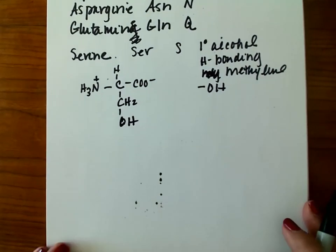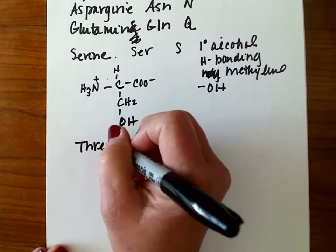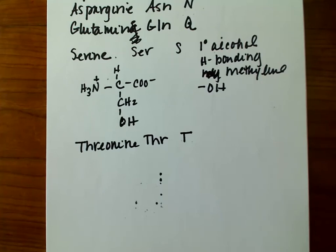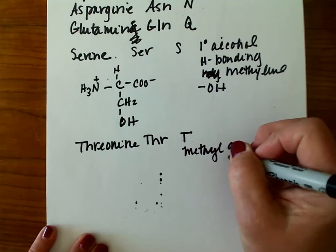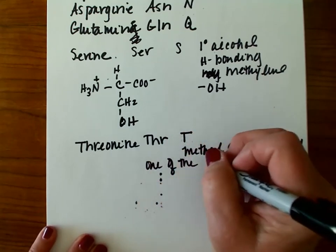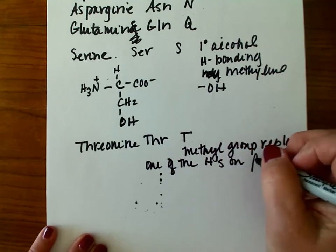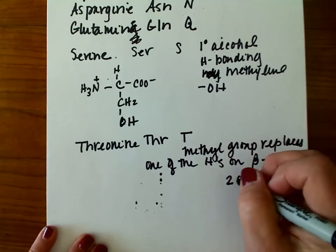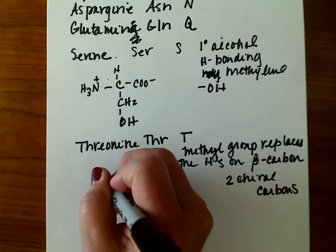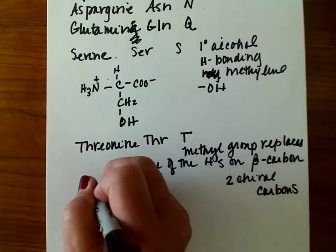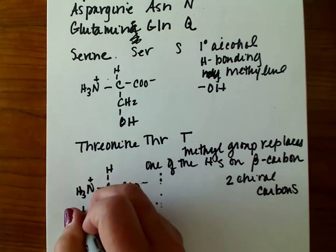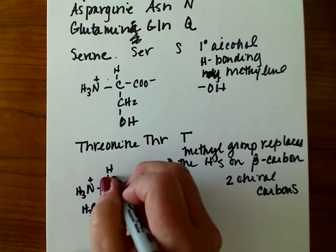Next up is threonine — THR, T. It is basically the same as serine except it has a methyl group that replaces one of the hydrogens on that beta carbon. This too will then have two chiral carbons. So we have our alpha carbon, alpha carboxyl group, alpha amino group, and a carbon attached to a hydrogen, a methyl group, and a hydroxyl group — so again two chiral carbons.